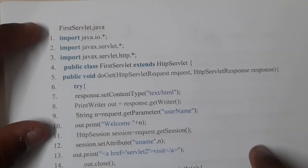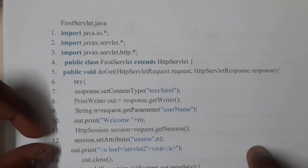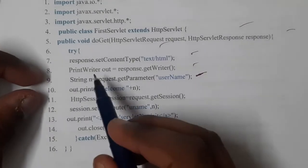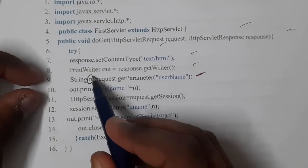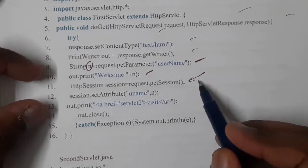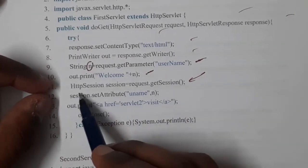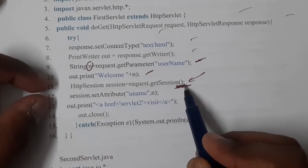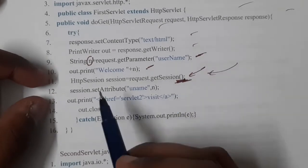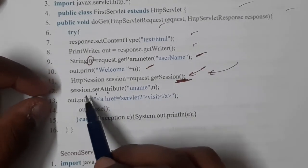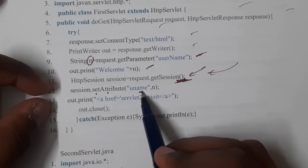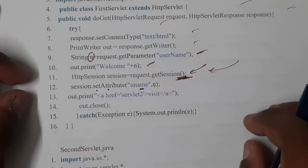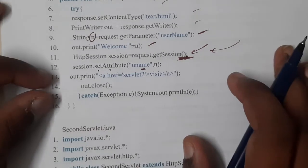In the first servlet, you collect the value from the HTML form and create a session. After the common code, you collect the name and store it in variable 'n'. Then you create the session using: HttpSession session = request.getSession(). To store data in the session, you use session.setAttribute("uname", n), which saves the name 'Ravi' into the session.